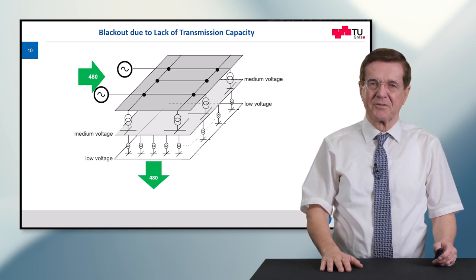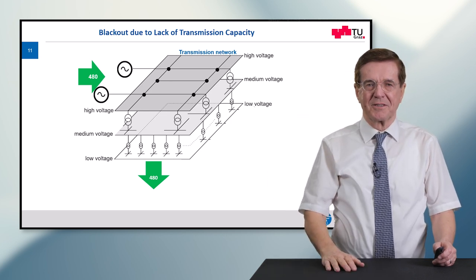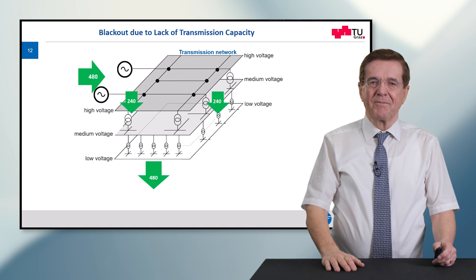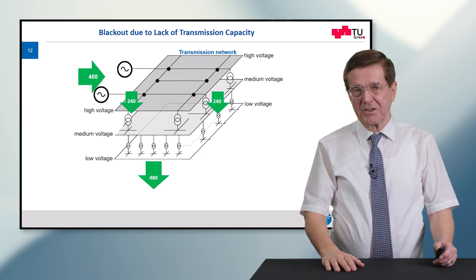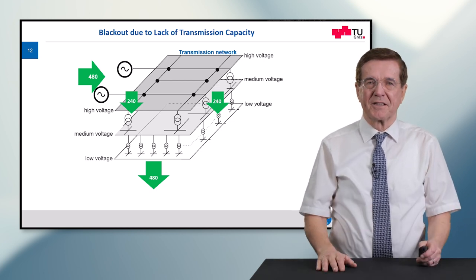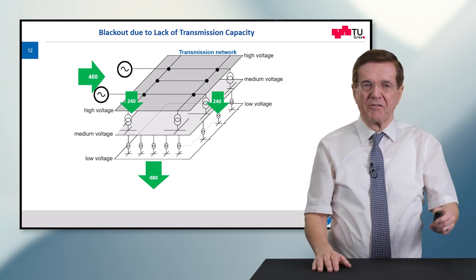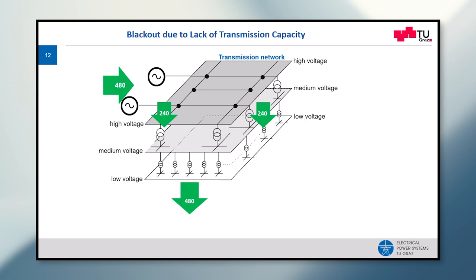The transmission grid through medium voltage provides the energy from the high voltage level down to the consumers. Now the transmission network is split into two parts — a left part and a right part — and each side can supply 50 percent of the full power. From left to right we must transport 240 megawatts, carried out in three parallel lines which share their burden, so 80 megawatts for each of them.